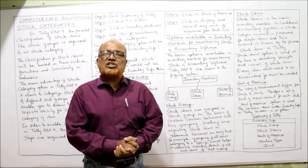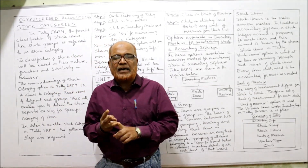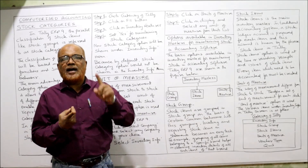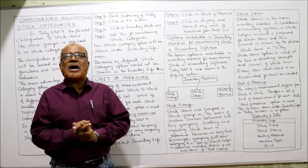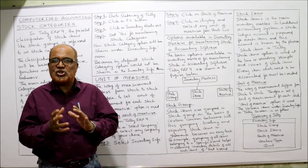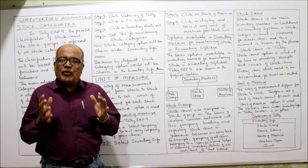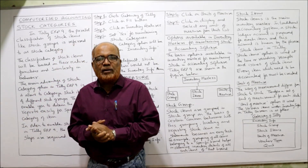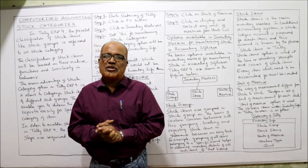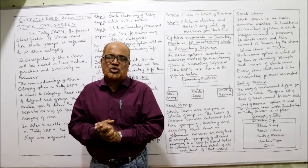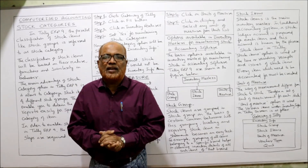In this video I have explained three topics: stock category, units of measure, and the options available in inventory masters for maintaining stock items in accounting software. I hope you understood these three concepts and can write them confidently in your examination. The next topic will be continued in the next video.